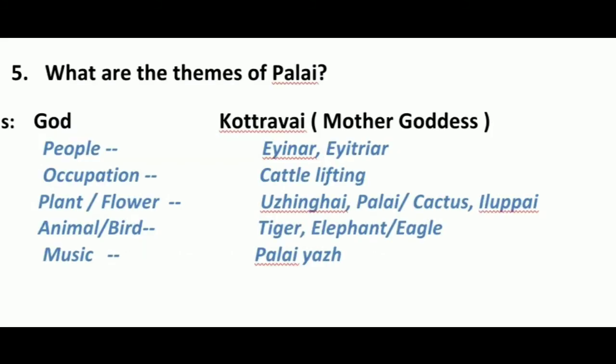Fifth: What are the themes of Palai? God - Kottravai, Mother Goddess. People - Eyinar, Eithiyar. Occupation - Cattle lifting. Plant and flower - Urandigai, Palai and Cactus, Ilupai. Animal and bird - Tiger, Elephant, and Eagle. Music - Palai Yal.